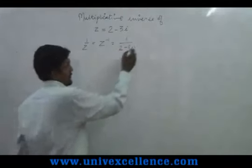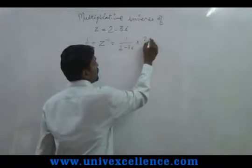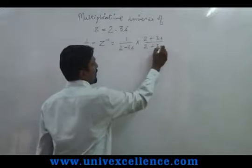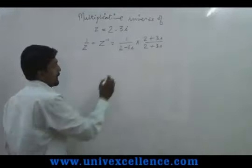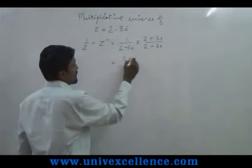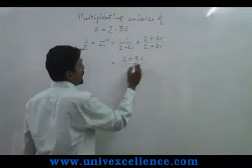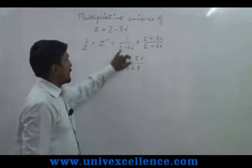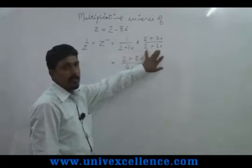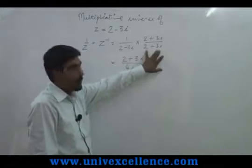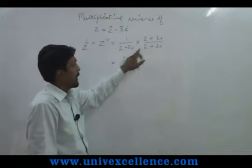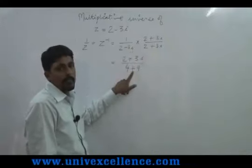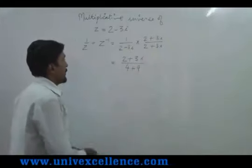Now rationalize by multiplying numerator and denominator by (2 + 3i). This gives (2 + 3i) upon (2 + 3i)(2 - 3i), which equals (2 + 3i) upon (4 + 9), using the identity (a - b)(a + b) = a² - b². Since it involves i·i which is i squared, giving minus one, the minus signs become plus, giving us 13 in the denominator.